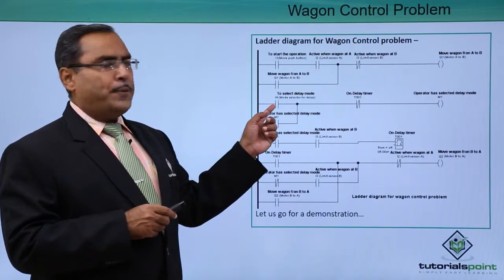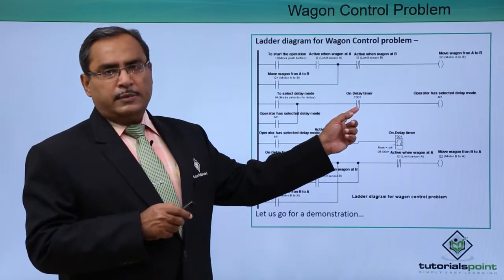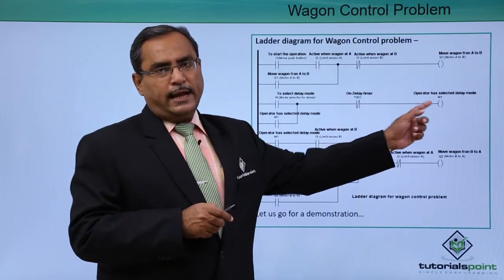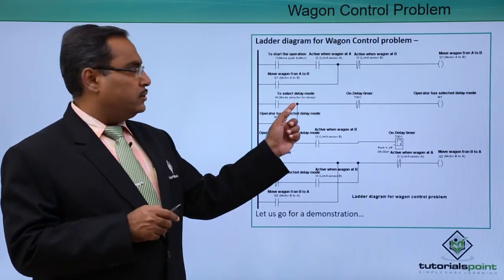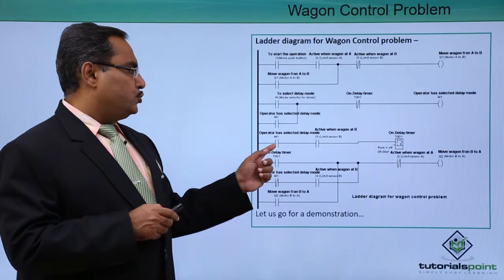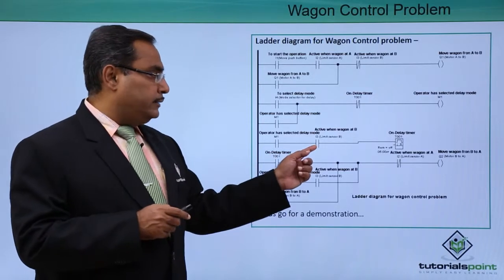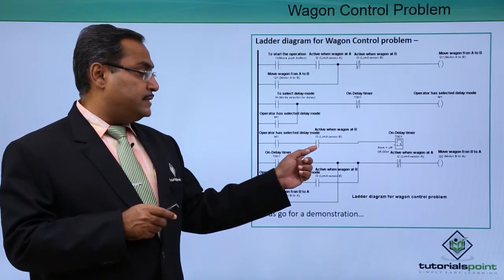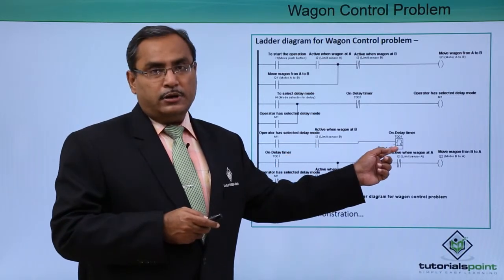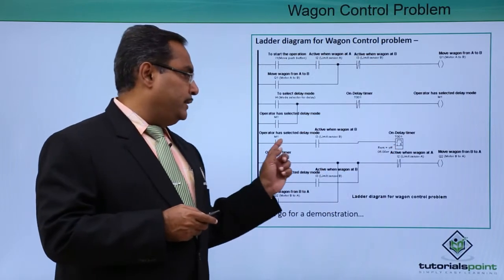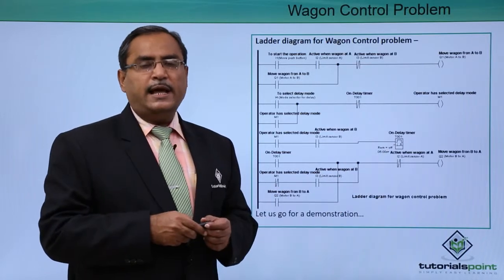The next rung handles the delay mode. When the operator selects the delay switch, M1 indicates the delay mode has been selected. A latch is provided since the input is a push button. When M1 is on (delay mode selected) and the wagon is at station B, the on-delay timer activates. The timer parameter is set to 5 seconds.